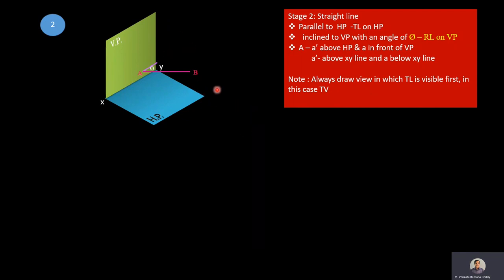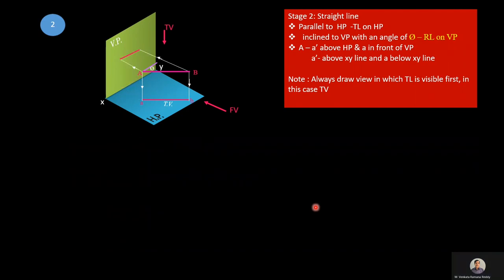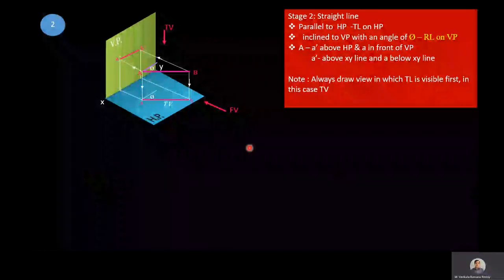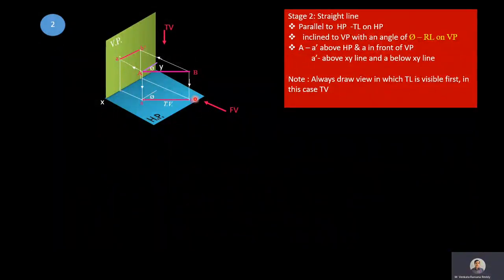At A and B, draw projectors vertically down towards the horizontal plane — those projectors meet at A and B on HP. Join AB — this is the true length of the line in top view. Then at A and B, draw projectors towards the vertical plane. Those projectors meet the vertical plane at A' and B'. Because the line is inclined to VP, we get reduced length on VP. Because the line is parallel to HP, true length is on HP.